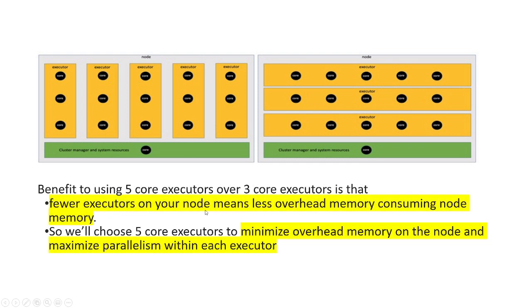The correct answer is to use the right side of the diagram — five cores per executor rather than three cores per executor. Why? Because fewer executors on the node means less overhead. On the right side there are fewer executors, while on the left there are more executors with fewer cores per executor. More cores per executor gives us more parallelism.